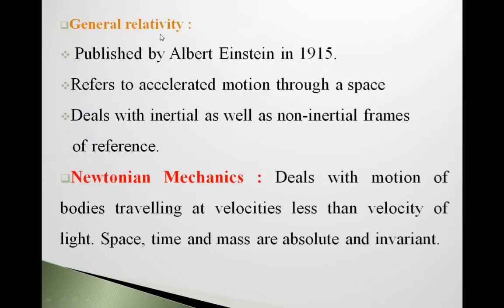Now we will see general relativity. It was published by Albert Einstein in 1915. It refers to accelerated motion through space. The first theory, special relativity, refers to constant motion, but this theory refers to accelerated motion through space. It deals with inertial as well as non-inertial frames of reference.